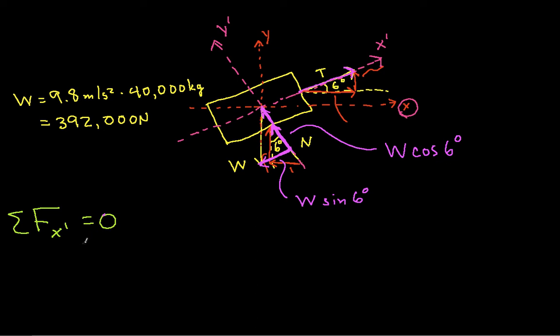So with this then, I can say that T, that's the x-prime coordinate of T, minus W sine 6 degrees is equal to 0. And getting the sum of forces in the y-prime direction equal to 0. In the y-prime direction, I have N, which is the normal force here, minus W cosine 6 degrees is equal to 0.